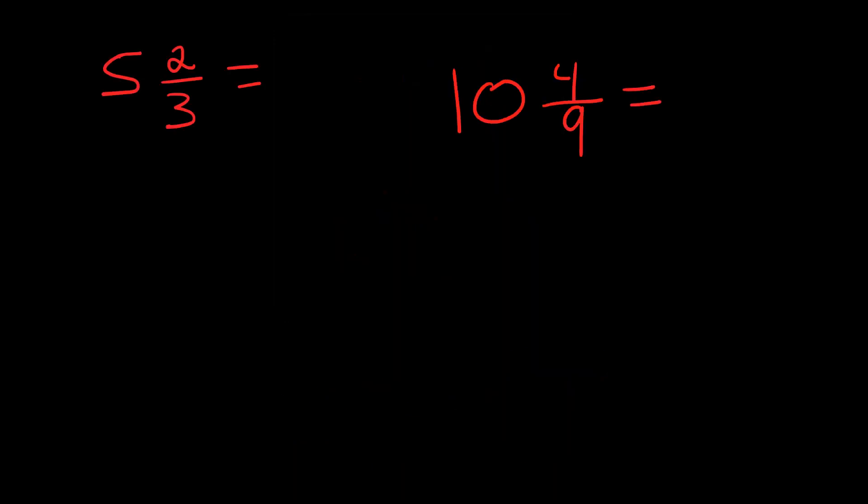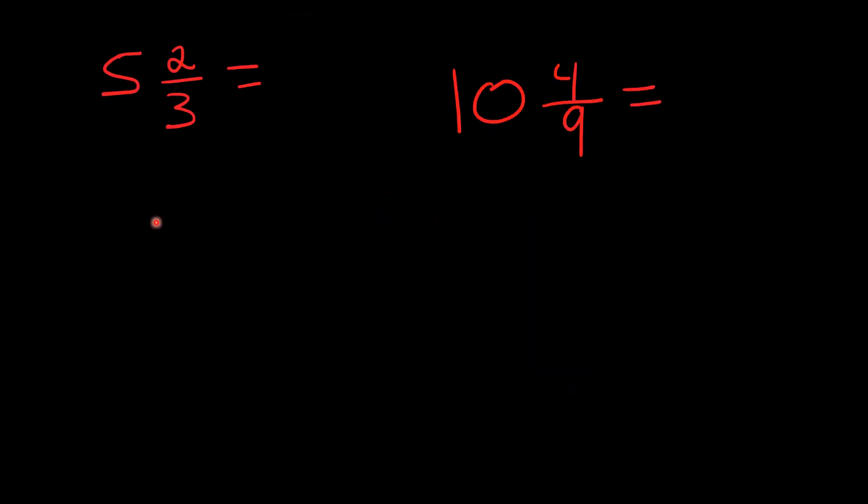I'll show you some examples. We have five and two-thirds. What we're going to do here is multiply the five and the three and add two. That would be 17, and then we're going to keep the denominator the same. That's three.